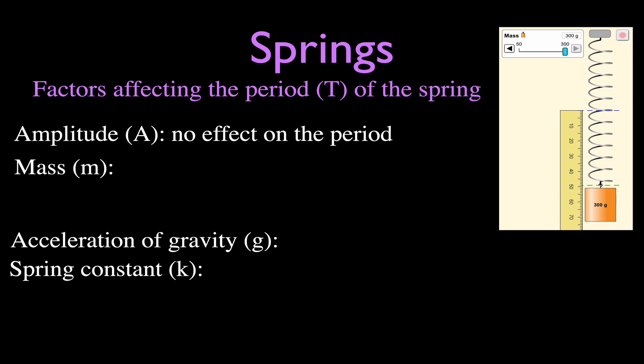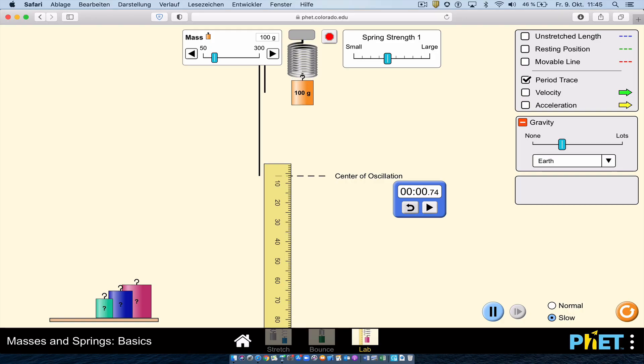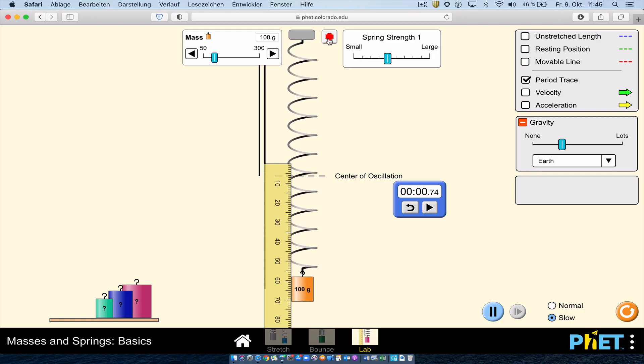That's a little counterintuitive, but that's how it works. When you pull the spring back farther, there's more stretch, so there's more force — and it all equals out. The period stays the same.